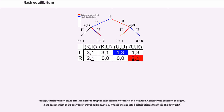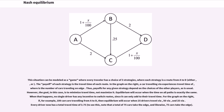An application of Nash Equilibria is in determining the expected flow of traffic in a network. Consider a graph where cars are traveling from A to D. This situation can be modeled as a game where every traveler has a choice of three strategies, where each strategy is a route from A to D. The payoff of each strategy is the travel time of each route, where the travel time on an edge depends on the number of cars traveling on that edge. Thus payoffs for any given strategy depend on the choices of the other players. However, the goal in this case is to minimize travel time, not maximize it. Equilibrium will occur when the time on all paths is exactly the same. When that happens, no single driver has any incentive to switch routes, since it can only add to their travel time.